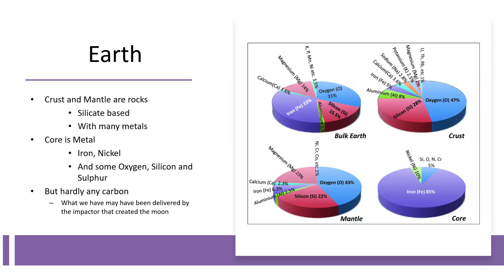If we look at the Earth, we don't have very much carbon. Our crust is made of silicates — oxides of silicon bound to metals like aluminium, iron, calcium, sodium, potassium, and magnesium. The iron in the core, mixed with nickel, accounts for quite a substantial proportion, with a few other elements mixed in, such as oxygen, silicon, and sulfur.